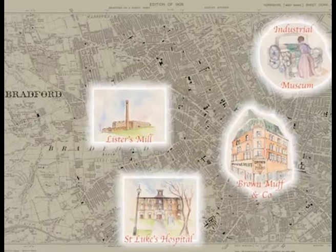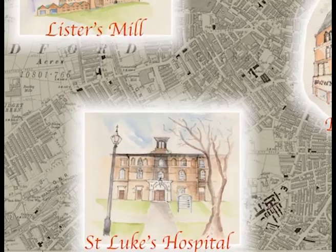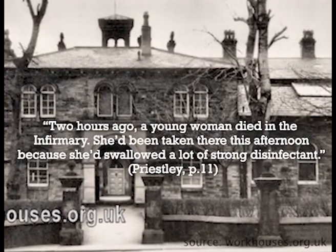Our first location is where Eva Smith dies — it's now an NHS hospital. As the Inspector says: "Two hours ago, a young woman died in the infirmary. She had been taken there this afternoon because she swallowed a whole lot of strong disinfectant." We're now at St Luke's Hospital in Bradford. This was originally a workhouse, and during the Edwardian period this is the sort of place that JB Priestley, who grew up in Bradford, would have thought of as where Inspector Goole would have encountered the original body. Inside, there would have been a mortuary as well.